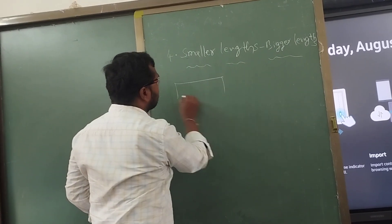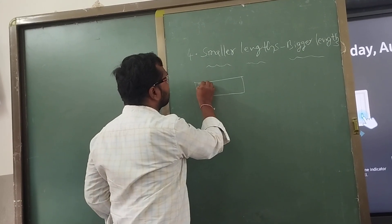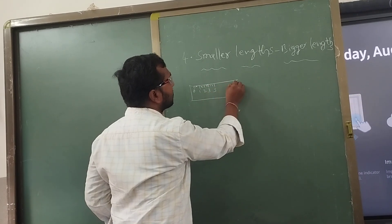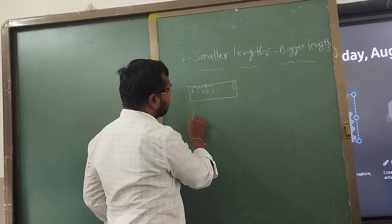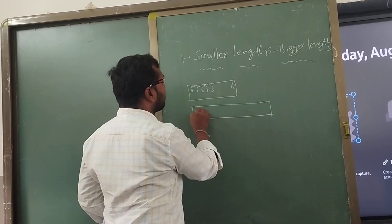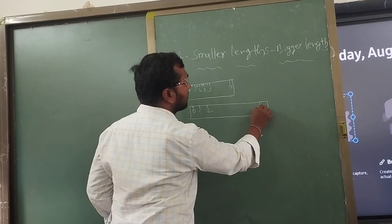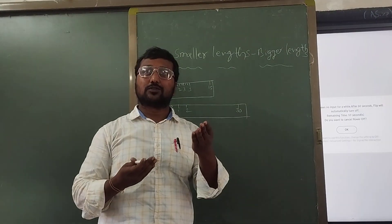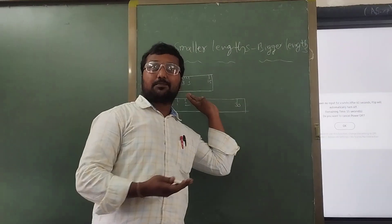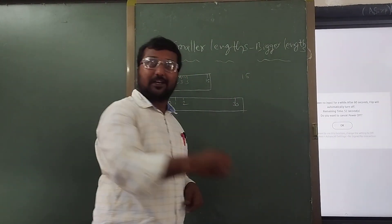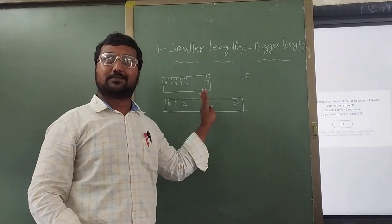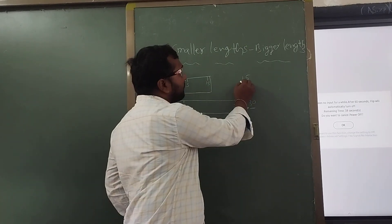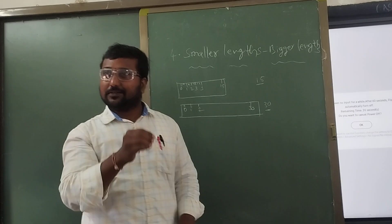This is a scale. Zero, one, two, three — and so on, it is 15. This is a scale. The scale is about 15 centimeters.